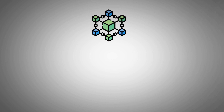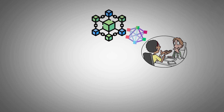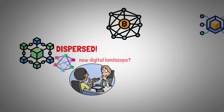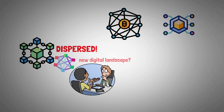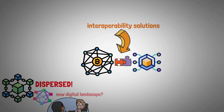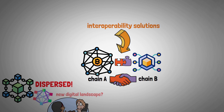Blockchain technology's introduction of decentralized systems has completely changed the digital landscape. But the ecosystem is dispersed, with different blockchains functioning independently of one another. Because of this, there is a growing need for interoperability solutions that can link these various networks. One such project that seeks to close the gap between various blockchains is Layer 0.